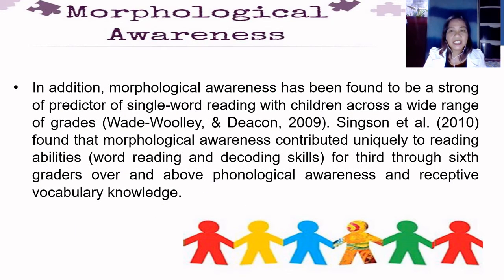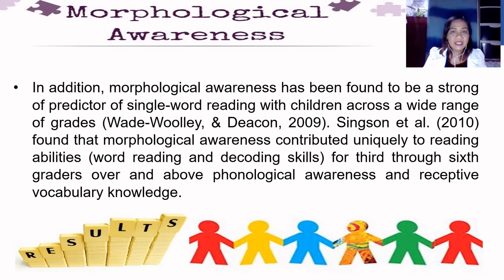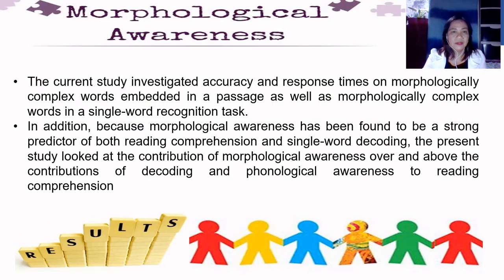In addition, morphological awareness has been found to be a strong predictor of single word reading with children across a wide range of grades. This is according to Wade-Woolley and Geekon of 2009. Singsun et al. of 2010 found that morphological awareness contributed uniquely to reading abilities for 3rd through 6th graders, over and above phonological awareness and receptive vocabulary knowledge. The current study investigated accuracy and response times in morphologically complex words embedded in a passage as well as in a single word recognition test. Because morphological awareness has been found to be a strong predictor of both reading comprehension and single word decoding, the present study looks at the contribution of morphological awareness over and above decoding and phonological awareness to reading comprehension.